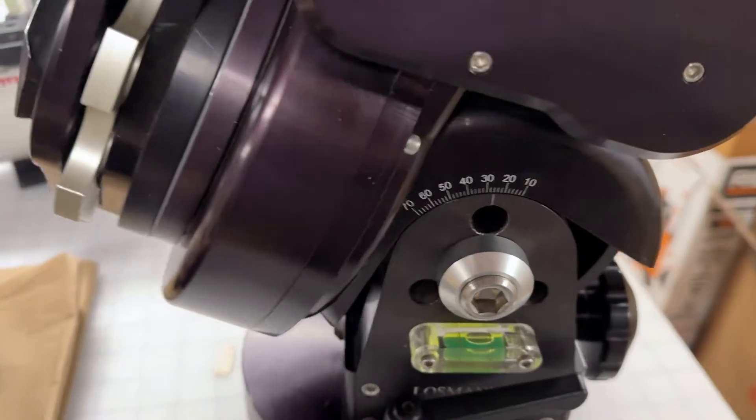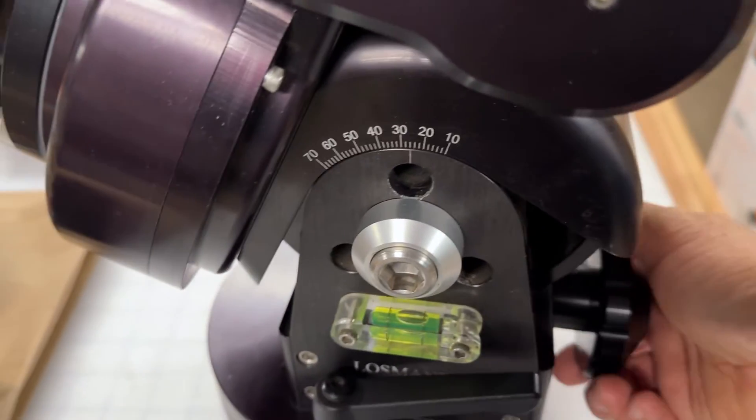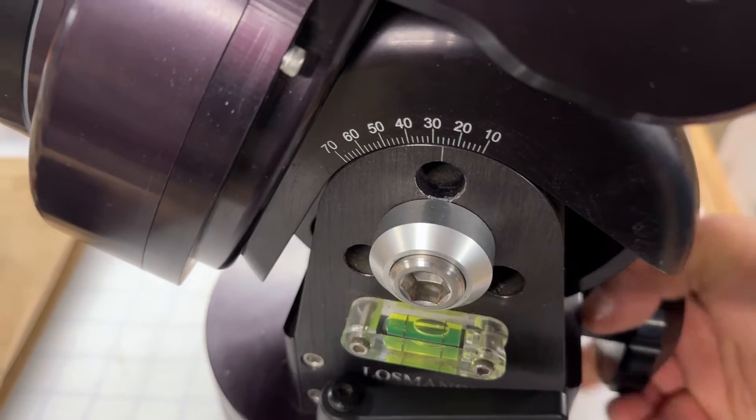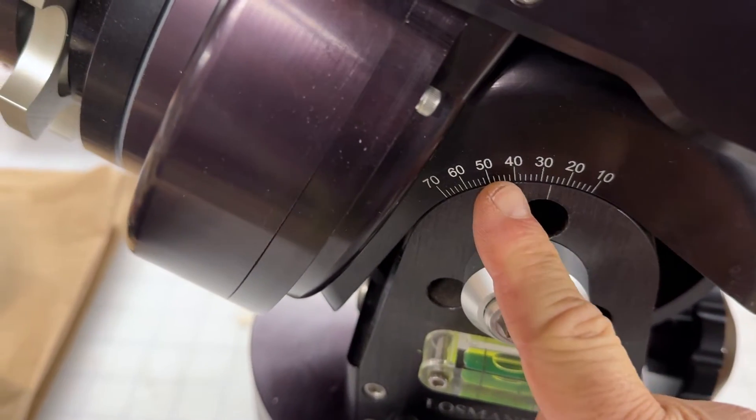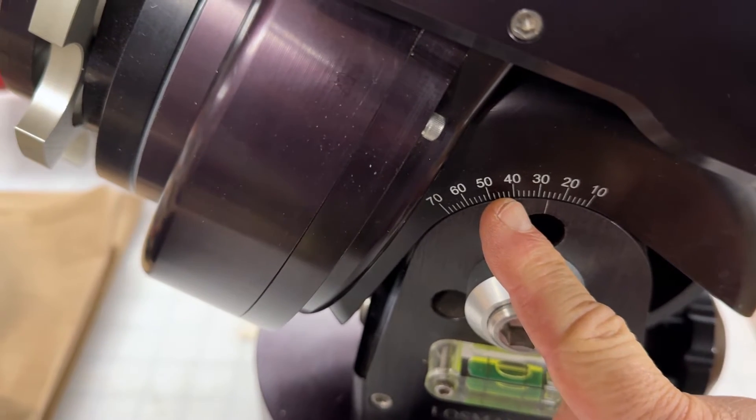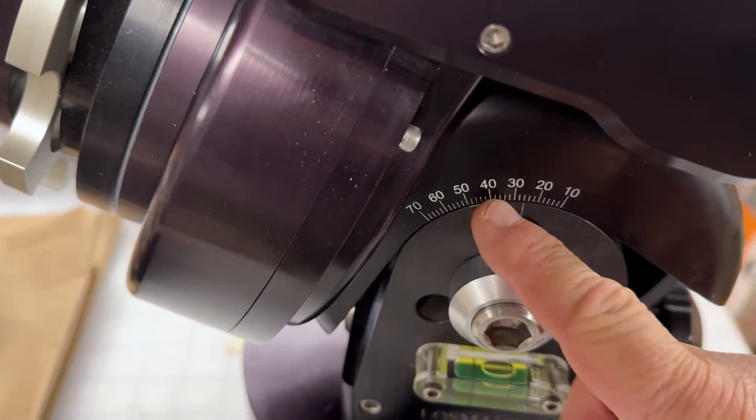Typically how you adjust it is you take this knob and you turn it and it would move. However, if you get up to about 42 degrees, here where I am it's 43 degrees, but it stops.